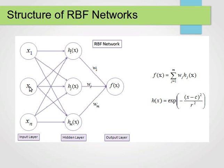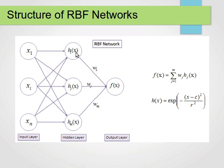In the detailed structure of an RBF network, we have an input layer corresponding to our input variables. The hidden layer has one or more neurons, each with a radial basis function as its transfer function — for example a Gaussian. The outputs of those hidden neurons become weighted inputs to the output layer. The output is the weighted sum of those inputs. For each neuron in the hidden layer we need to find two parameters: the center and the radius.